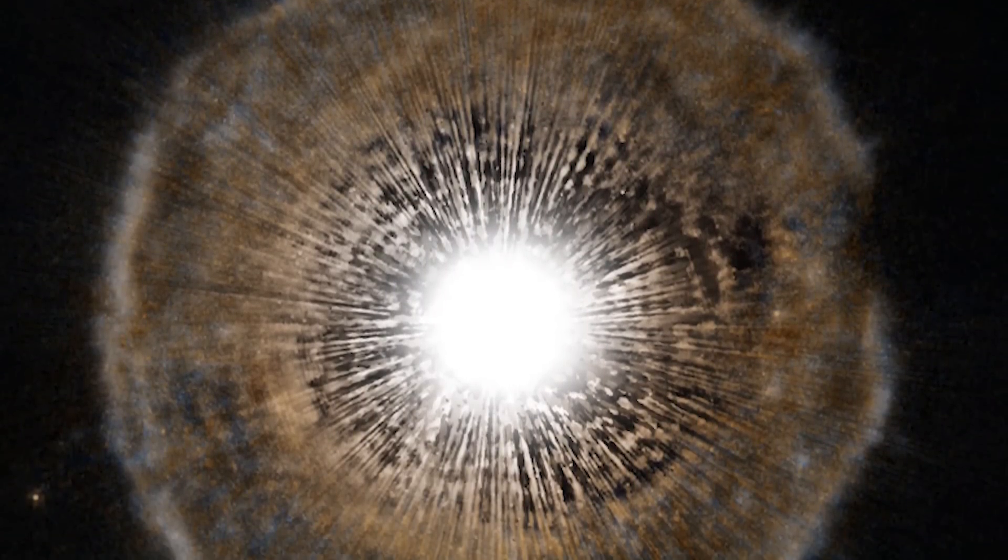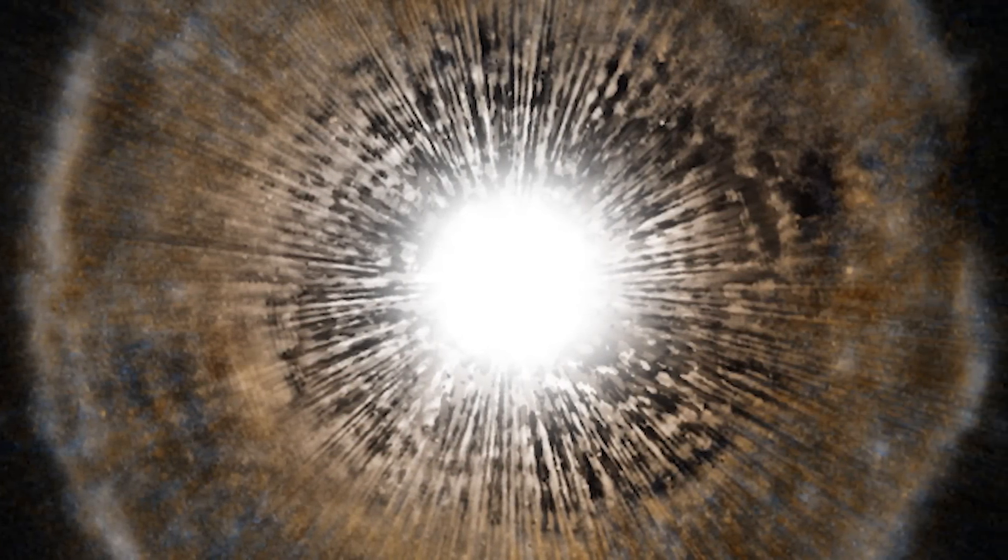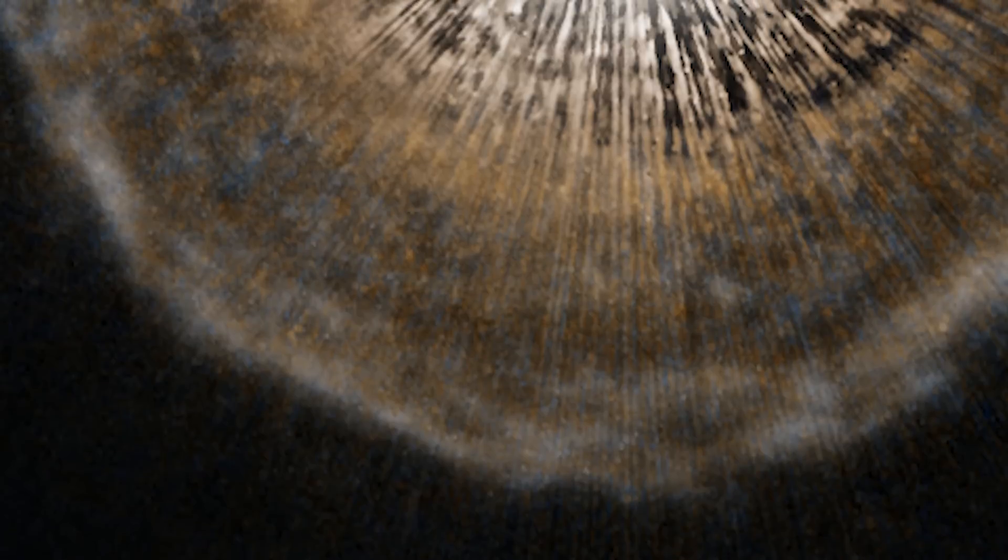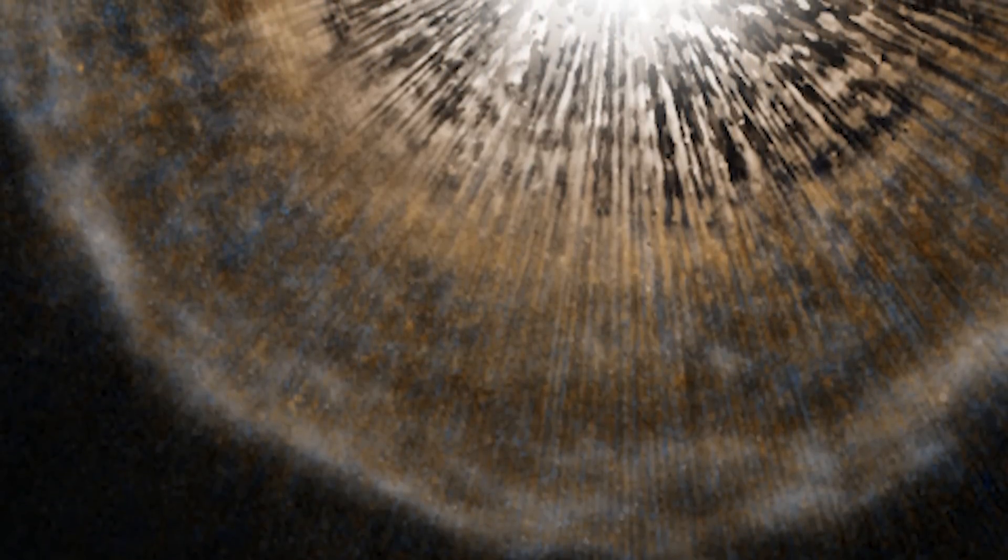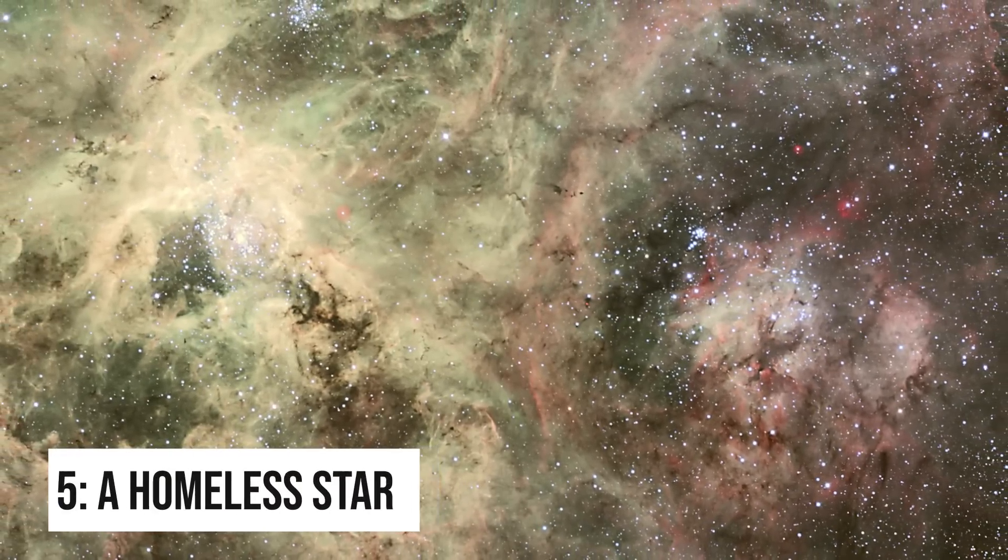Located in the constellation of Camelopardalis, the giraffe, near the north celestial pole, UCAM itself is actually much smaller than it appears. In fact, the star would easily fit within a single pixel at the center of the image. Its brightness, however, is enough to overwhelm the capability of the advanced camera. Number five, a homeless star.